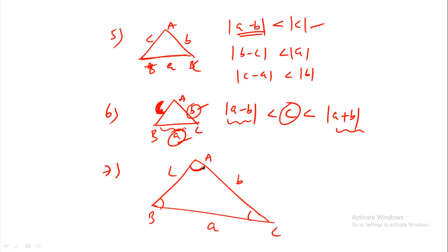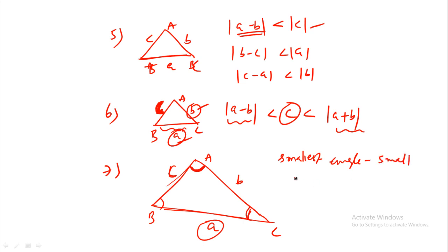The greatest angle's opposite side is always the largest, and the smallest angle's opposite side is always the smallest. This is a very very important property of triangles.